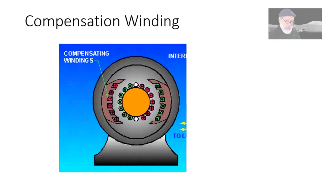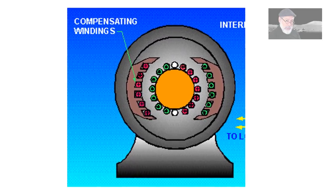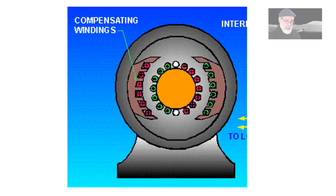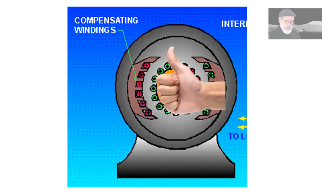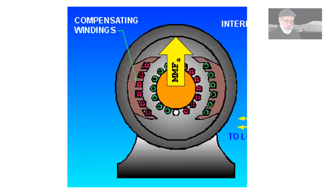Let's see a way of compensating for this effect. The MMF applied by the armature current represented in green when the current is coming towards and in red when the current is going away is given by the right hand rule. The MMF applied by the armature current is like this at 90 degrees with the flux.